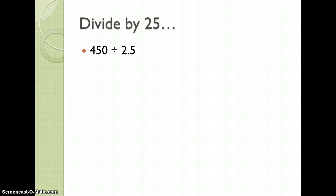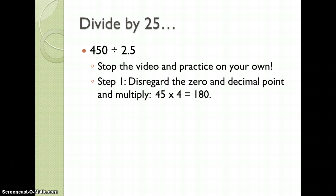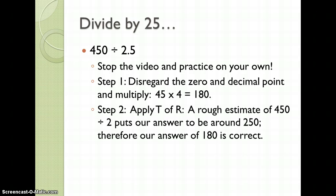450 divided by 2.5 — please stop the video and practice on your own. Disregard the 0 and decimal point and multiply 45 times 4, which is 180. A rough estimate of 450 divided by 2 puts our answer to be around 250. Therefore, the answer found in step 1 is correct — no decimal or additional zeros will need to be added.